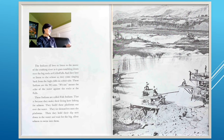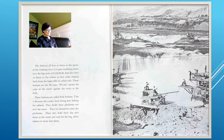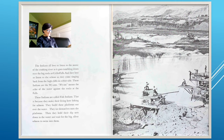The Indians love to listen to the music of the crashing river as it goes tumbling down over the big rocks at Celilo Falls, and to the echoes singing back from the high cliffs. These Indians are the Wayams. Wayam means 'the echo of the water against the rocks at the falls.' These Indians are called fish Indians because they make their living fishing for salmon. They build platforms out over the water, tie themselves on, and hold their dip nets down into the water waiting for the big silver salmon.